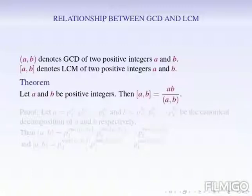The general relationship between GCD and LCM is given in the following theorem. Let a and b be two positive integers. Then [a, b] equals a times b divided by (a, b).